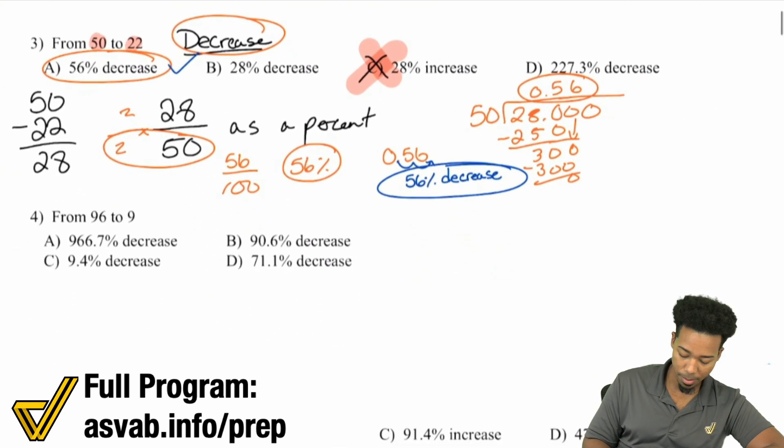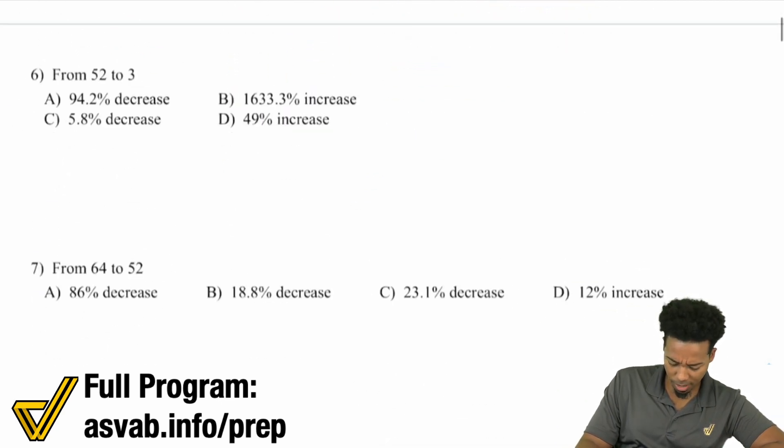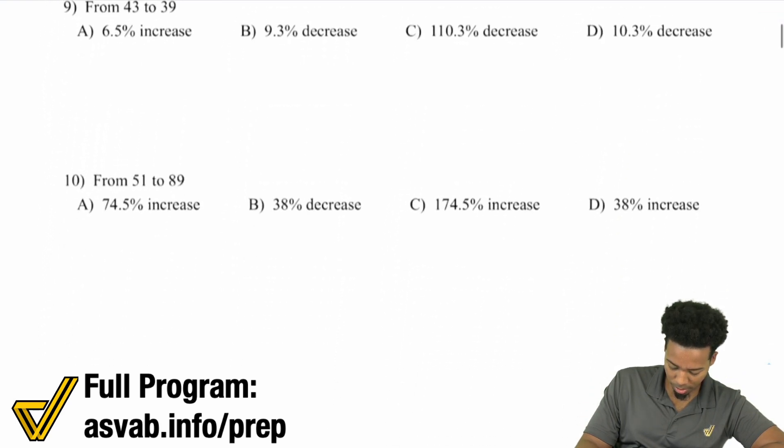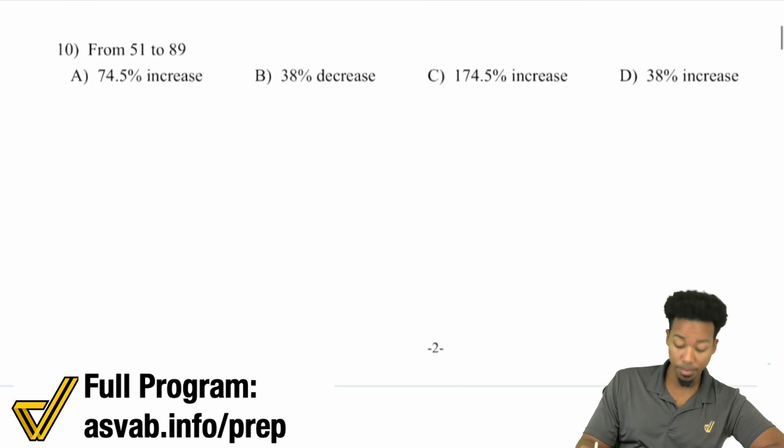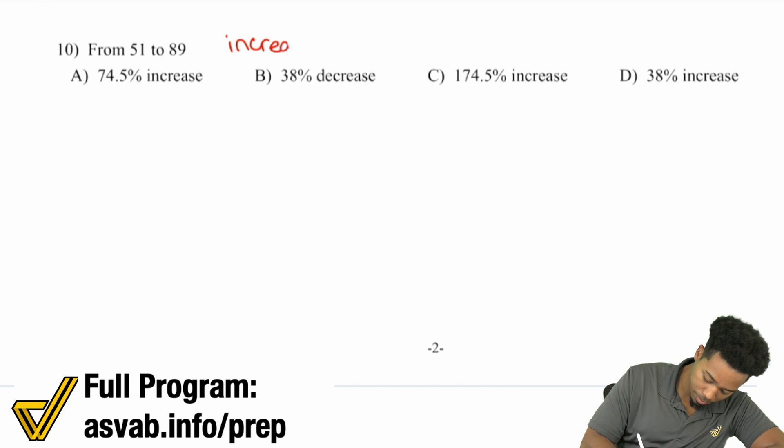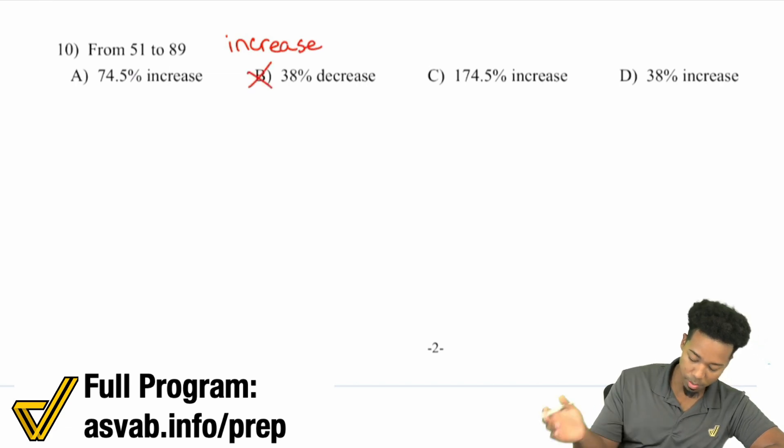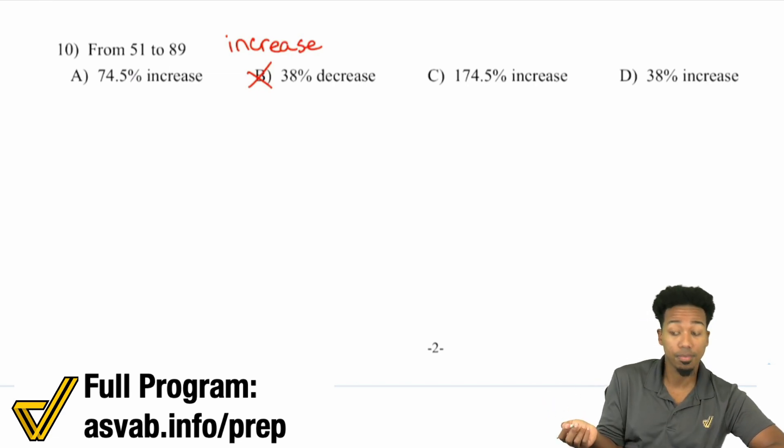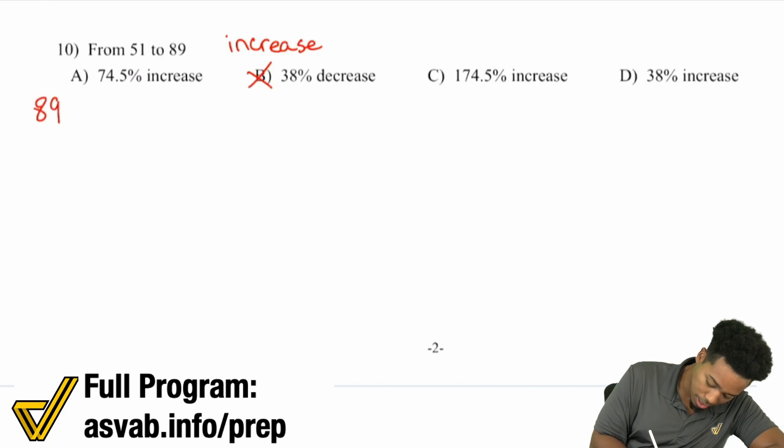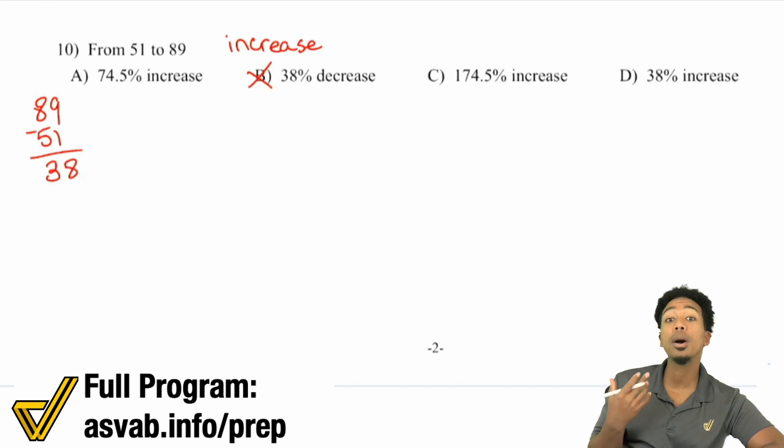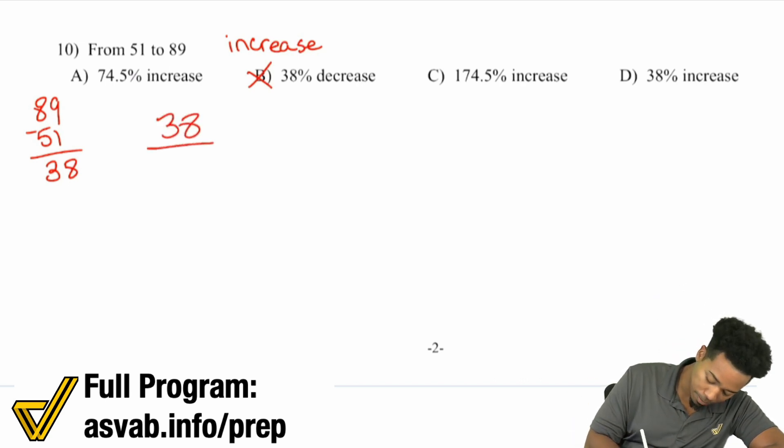I hope you see the pattern. What we're trying to do is write the percent change. You need to know whether it was an increase or decrease, then write the change as a percent of the original number. For 51 to 89, that's an increase, so it's not B. It's either A, C, or D. What's the difference? What was the change? 89 minus 51 is 38. That's the value change. Let's write that as a percent by doing 38 divided by 51.